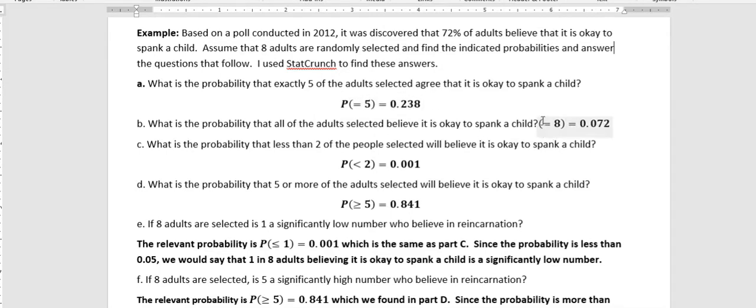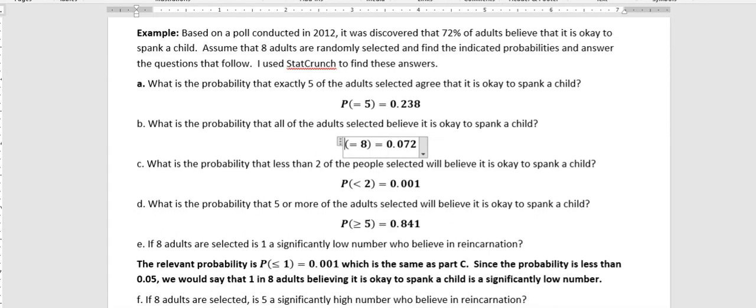The next one is asking, what's the probability that everybody that I talked to would say that it was okay? That's another equals to one, so I'm not going to show you how to calculate that. You would basically just change the five to an eight over there. The probability that exactly eight, that is all of them, is 0.072. About 7.2% of the time you would get all eight of them.